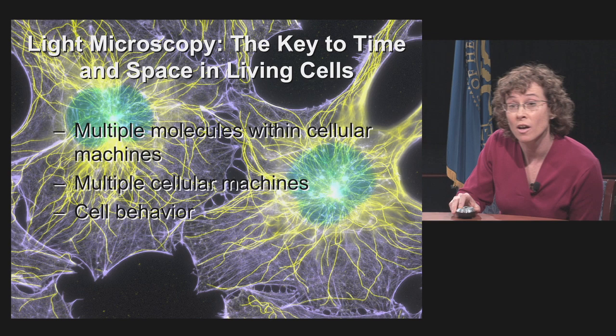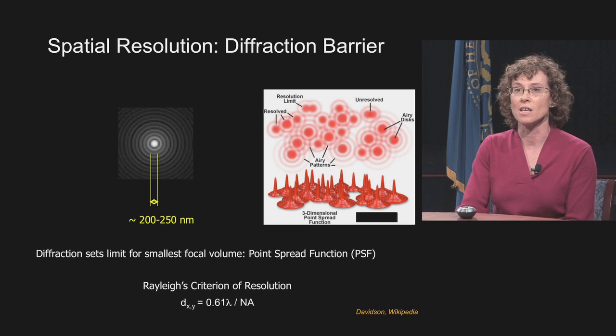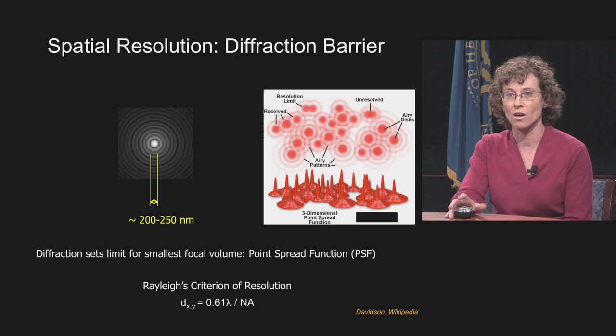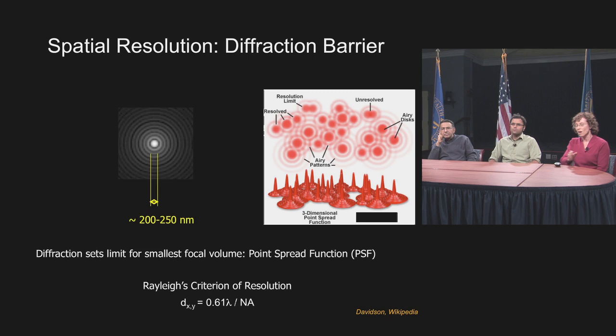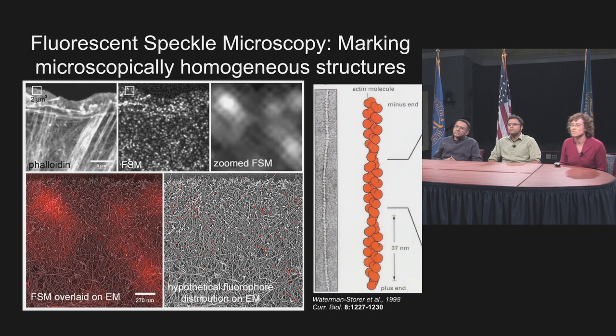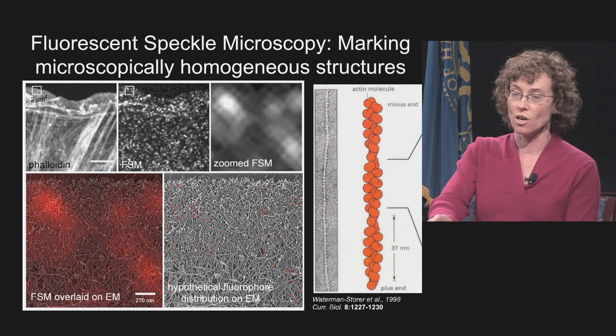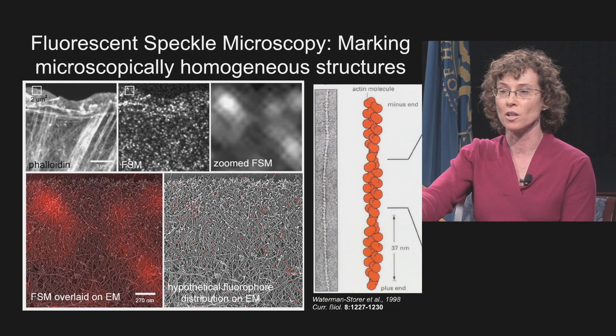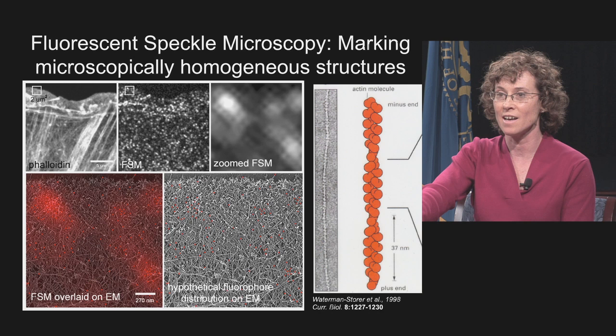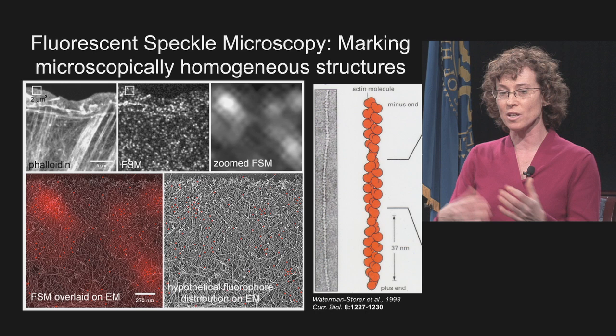The problem is that light microscopy is limited in its resolution to about a quarter of the wavelength of light, or about 200 to 250 nanometers. When these diffraction-limited image regions or point spread functions get close together, you can't resolve them anymore. For example, actin filaments are made up of globular actin proteins about 8 nanometers in size that assemble into dynamic polymers, and it's the assembly, disassembly, and motion of these polymers that animate the cell and drive cell migration.